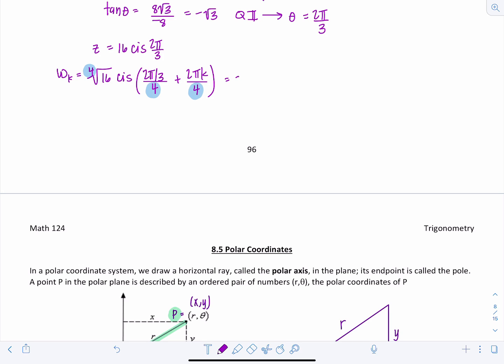So the fourth root of 16 that's 2. And then I'm going to have cis 2 pi over 3 divided by 4 is going to be pi over 6, plus pi over 2 k. Okay so this is the formula we're going to use to get all of our fourth roots.